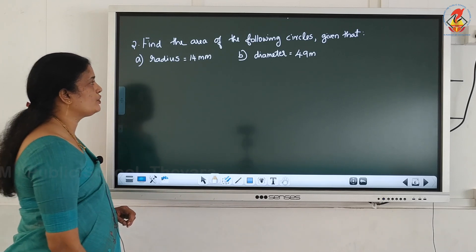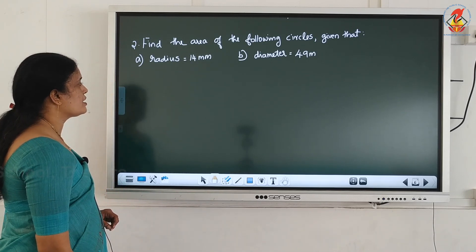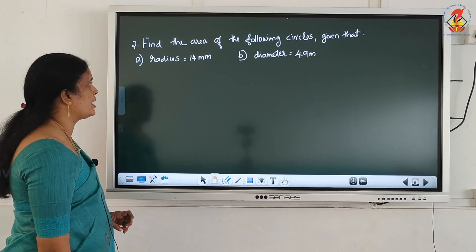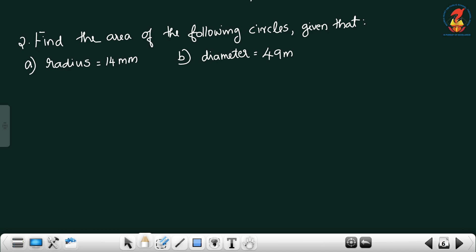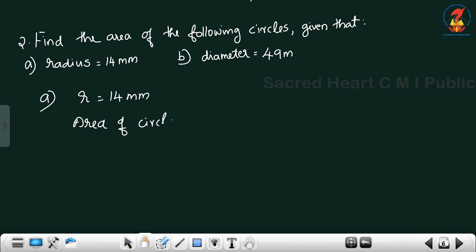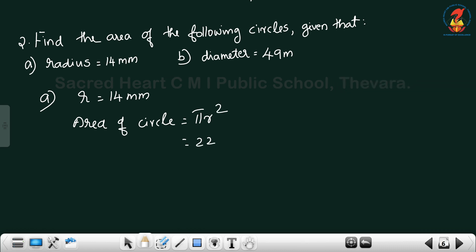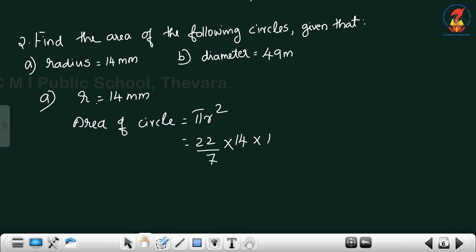Second question: find the area of the following circles. Given radius equals 14 millimeter and diameter equals 49 meter. For the first part, radius equals 14 millimeter. Area of circle equals pi r squared, equals 22 by 7 into r squared. r equals 14, so 22 by 7 into 14 into 14. 7 and 14 cancel 2 times, giving 22 into 2 equals 44, then 44 into 14.